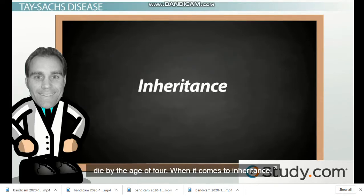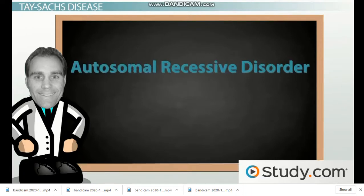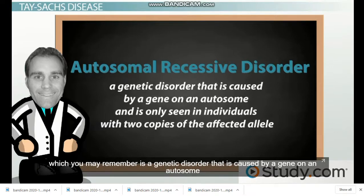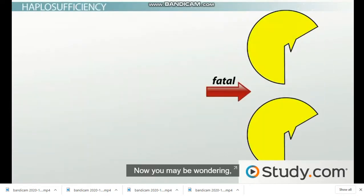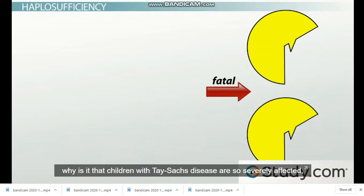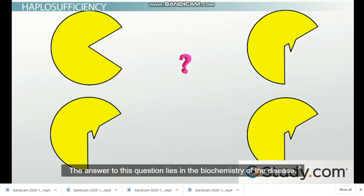When it comes to inheritance, Tay-Sachs disease is an autosomal recessive disorder, which is a genetic disorder caused by a gene on an autosome and is only seen in individuals with two copies of the affected allele. You may be wondering why children with Tay-Sachs disease are so severely affected, and yet carriers who have one copy of the Tay-Sachs allele show no signs of the disease whatsoever. The answer to this question lies in the biochemistry of the disease.